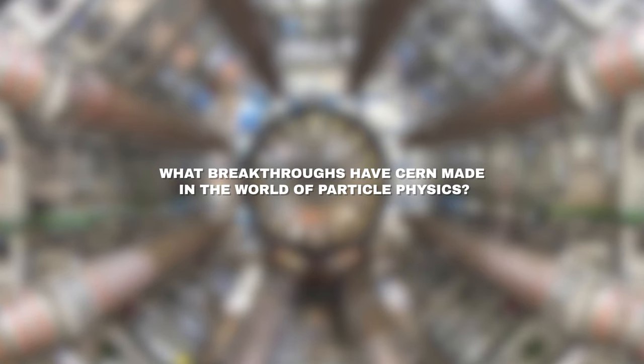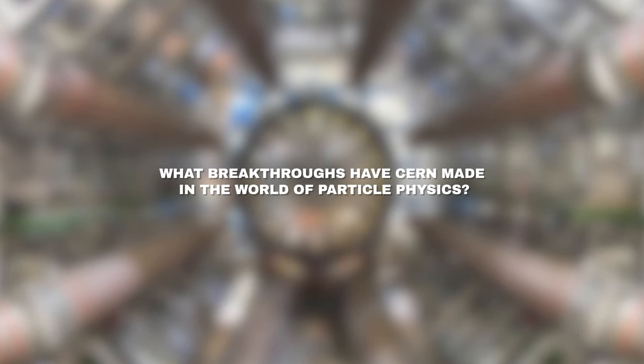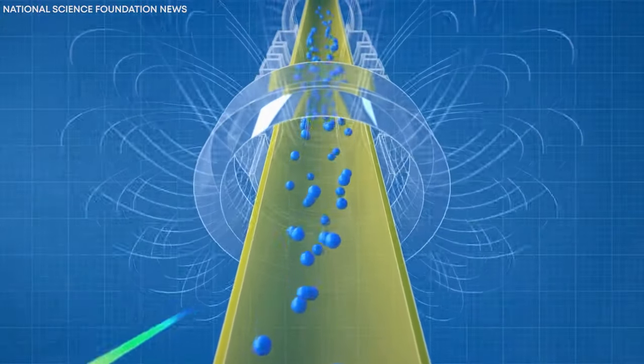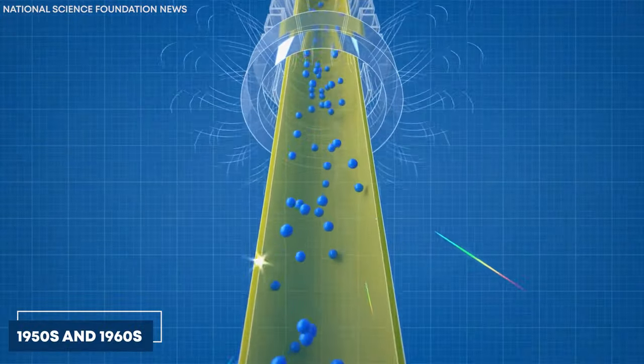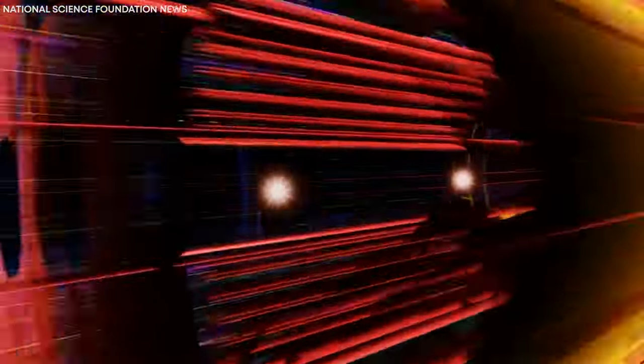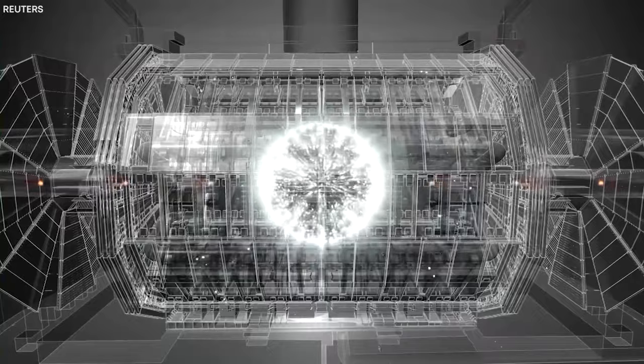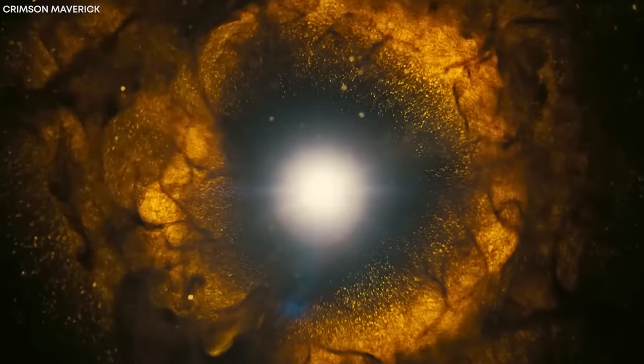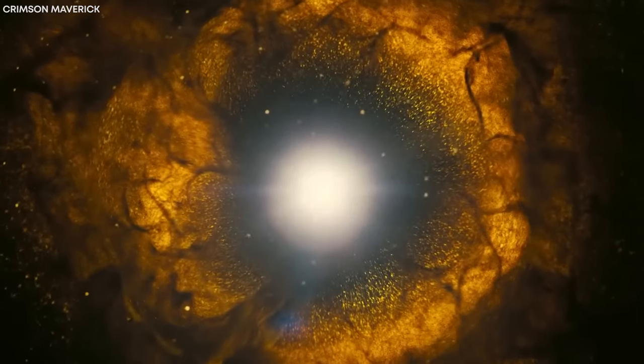What breakthroughs have CERN made in the world of particle physics? CERN's involvement in antimatter research can be traced back to the 1950s and 1960s, when particle accelerators became powerful enough to produce and study antiparticles. At that time, CERN focused primarily on studying high-energy collisions and exploring the properties of various particles.